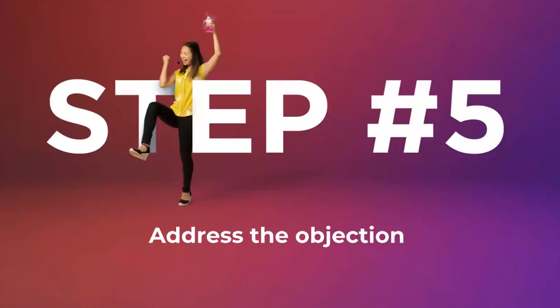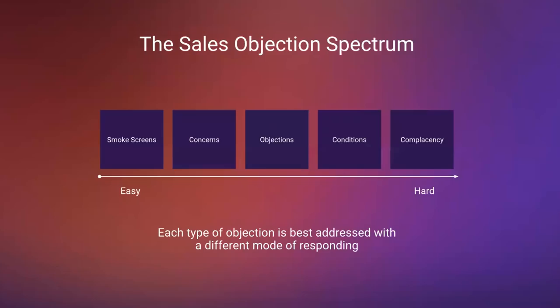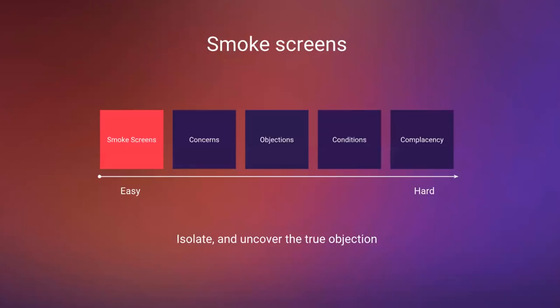Step number five is to address the objection. Now that we've executed the first four steps, it's time to figure out what kind of objection we're dealing with and what kind of response each type requires. The first is smoke screens — all the way to the left on the easy-to-hard spectrum. The smoke screen itself is easy to address and get rid of, but what's behind it is not so easy.